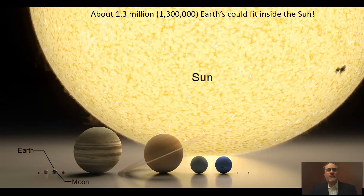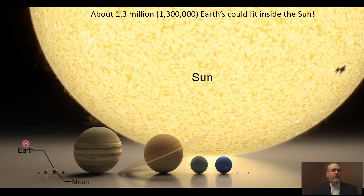I want to zoom in on this photo a bit, because at the scale where we can see the entire sun, we can't see some things I definitely want to point out. If we look at these little dots, one of those little bits over there is labeled Earth. This is the relative size of Earth when compared to our sun. Everything you know about is on that little hunk of rock, and when you look at it right next to our sun instead of 93 million miles away, it's really incredible.